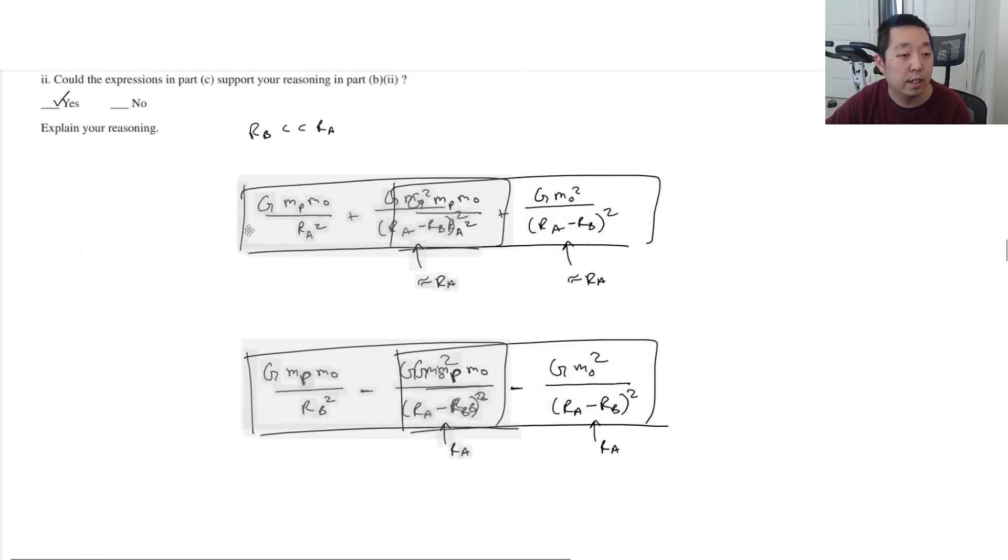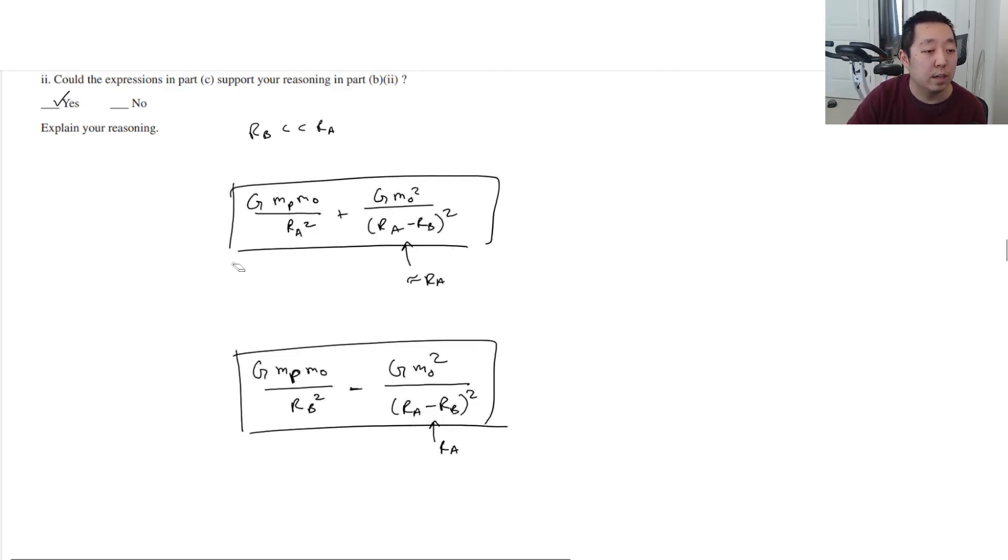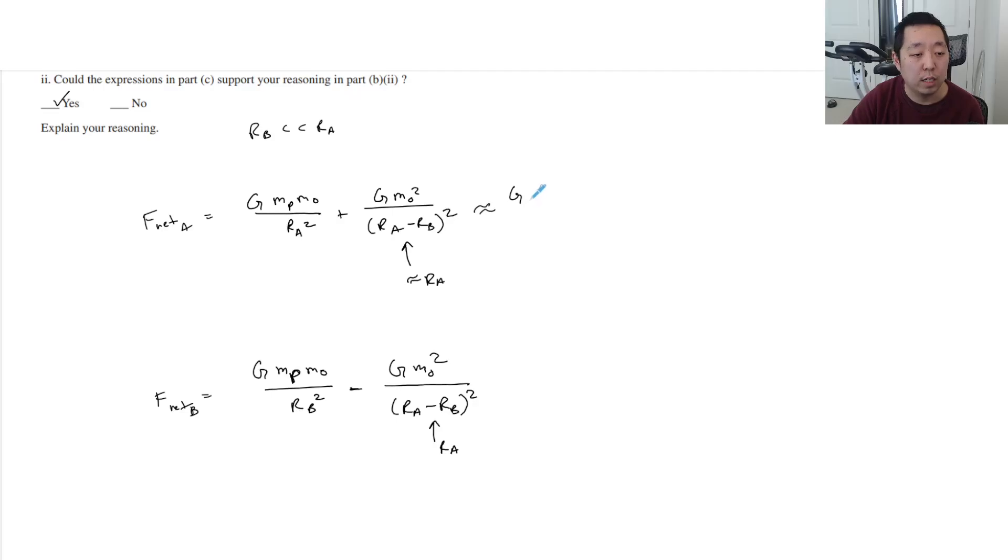I'll just copy that there, and I could say then I would point out that those are approximately equal to RA, right? So this would be F net on A, this is F net on B. It's approximately equal to GMPM0 over RA squared plus GM0 squared over RA squared, because RA is as much, RB is very tiny compared to this, and this is about equal to GMPM0 over RB squared minus GM0 squared over RA squared, but like, these three are all very tiny compared to this guy.